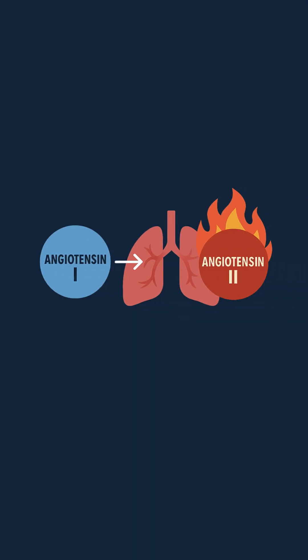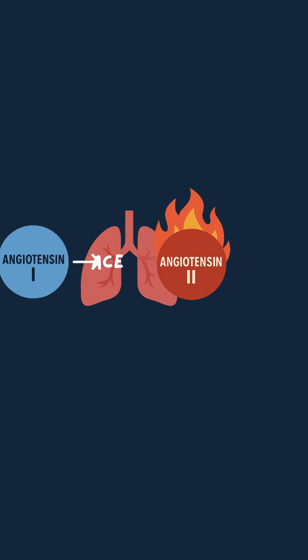Angiotensin 1 travels through the bloodstream to the lungs, where it meets an enzyme called ACE, or angiotensin converting enzyme. ACE converts angiotensin 1 to angiotensin 2, a highly active hormone.